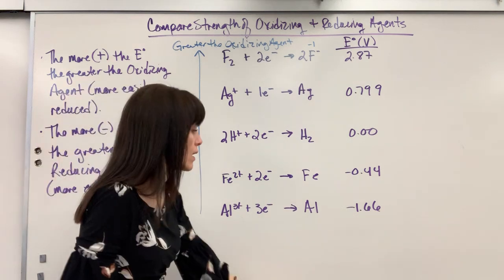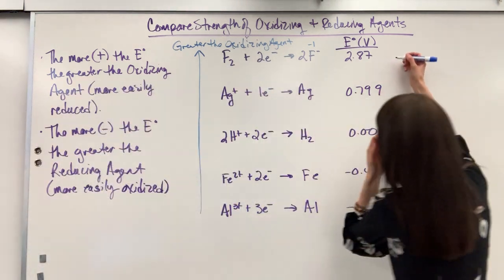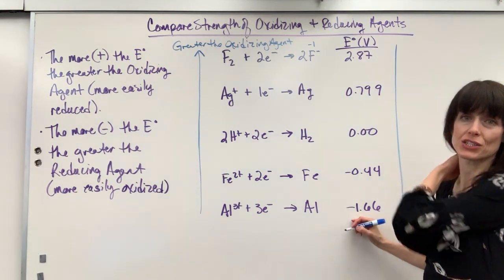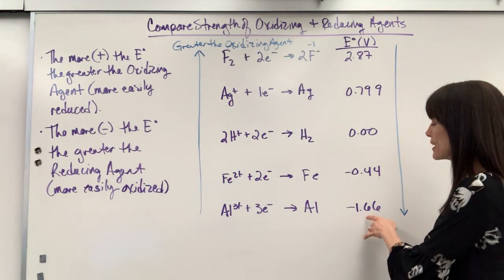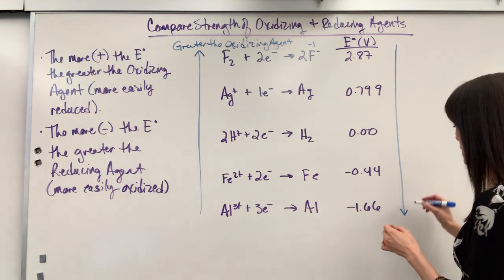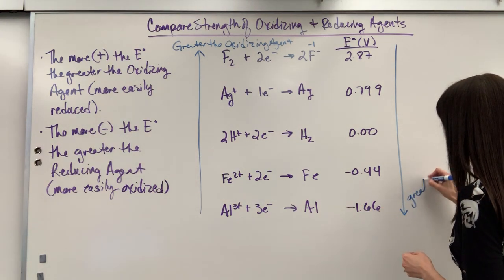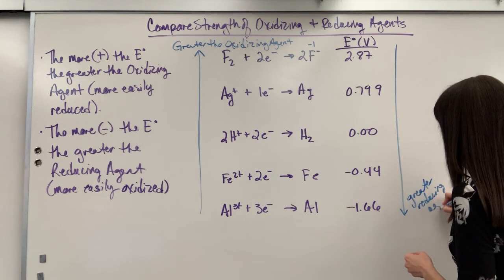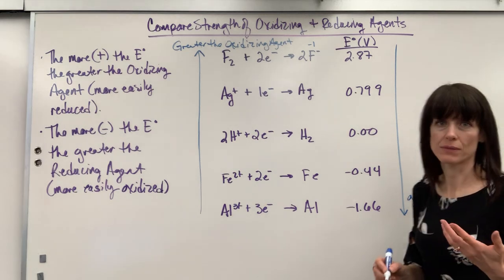Now, just opposite. As you go down, the more negative the E value on a standard reduction potential table, the more easily it is oxidized, which means this is going to be a greater reducing agent.